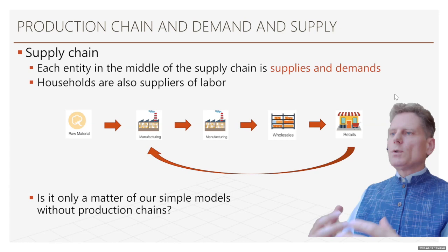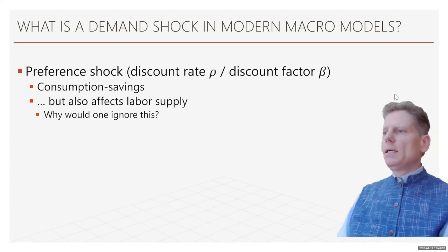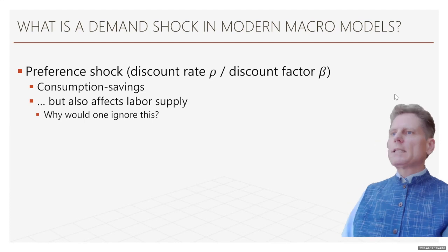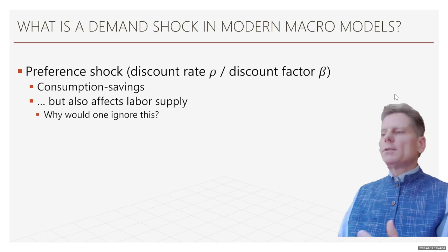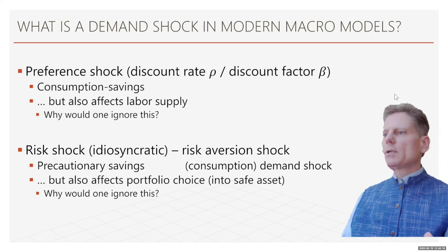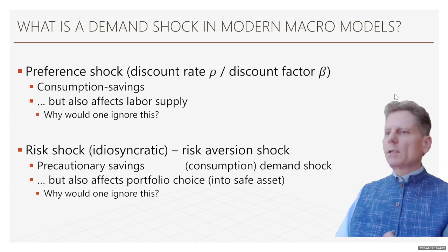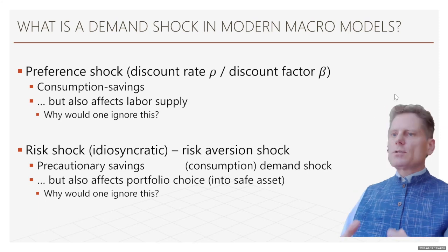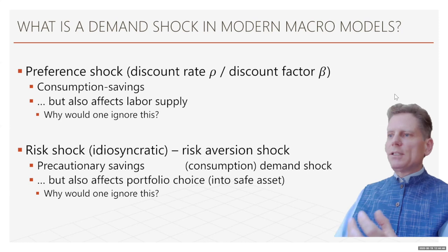What is a demand shock in modern macroeconomics and how do we typically model it? One way is through preference shocks: we change the discount factor beta, which affects consumption-savings decisions — suddenly people become less patient, consume more and save less or vice versa. This also affects the labor supply decision. Alternatively, we can model a demand shock as an increase in risk: the volatility of shocks goes up, or risk aversion rises, increasing precautionary savings demand, leading to less consumption — again a consumption demand shock. But this also affects portfolio choice between risky and less risky investments, and it always remains a challenge to separate these two components.